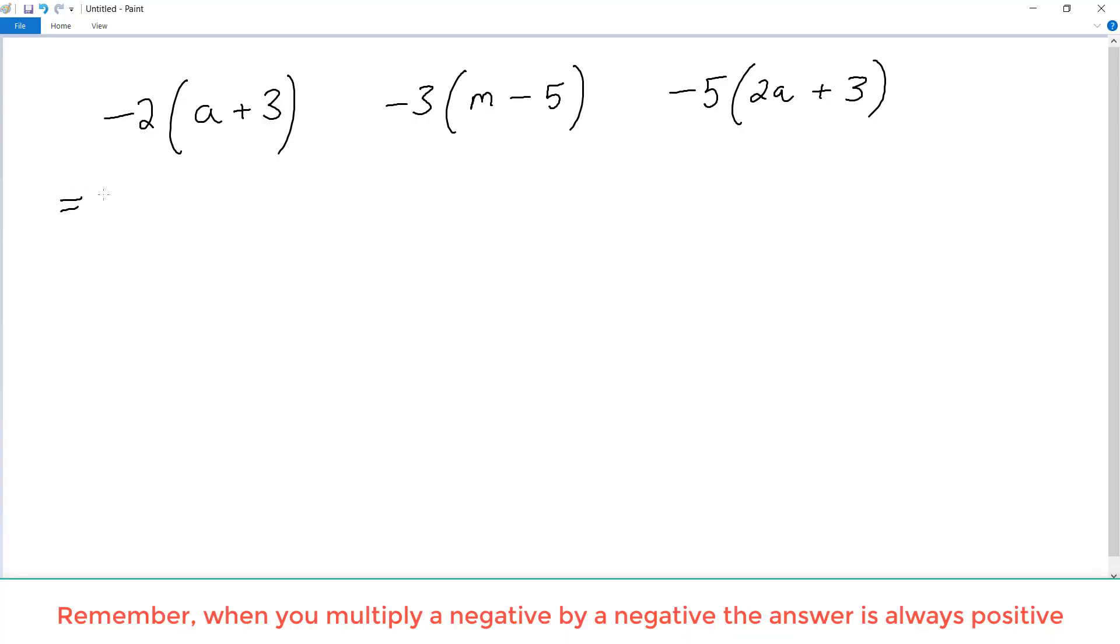Okay, our first problem is negative 2. We're going to multiply it into the bracket, so negative 2 times a. We use the same symbol, plus, and we have the negative 2 and we're multiplying it in, so negative 2 times 3.